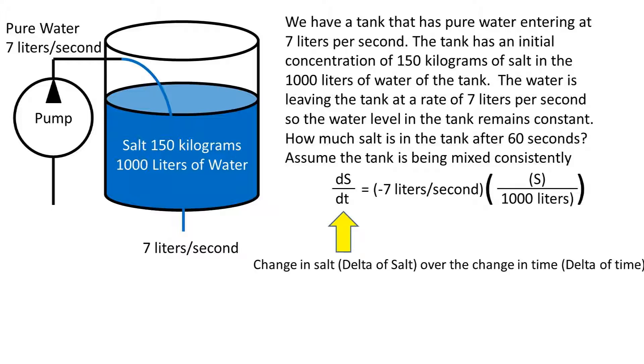So we need to lay out the differential equation for this problem. First, we are concerned with the change in salt, or delta of salt, over the change in time, or delta of time. This is denoted as ds over dt.